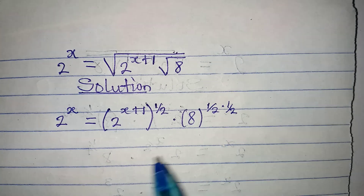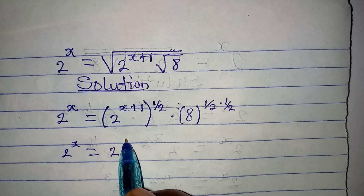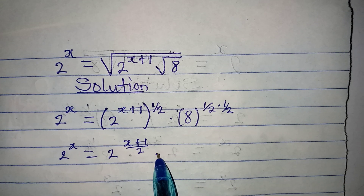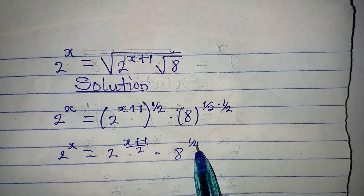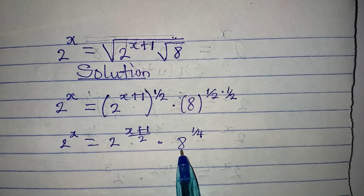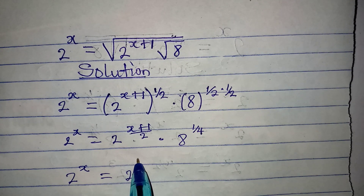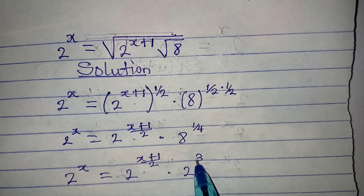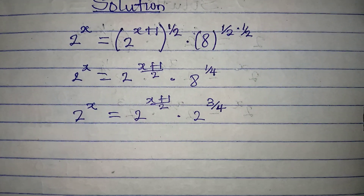Let's deal with the powers first. We have 2 to the power of x equal to 2 to the power of (x+1) over 2, multiplying by 8 to the power of 1/4 — that is, if we multiply the powers. Now, realize that everything is in base 2, but 8 is not, so we express 8 as 2 to the power of 3. Multiplying 3 by 1/4 gives us 3/4.